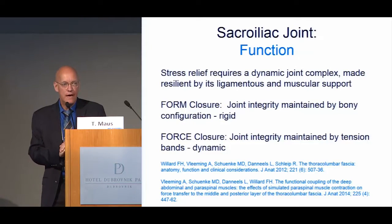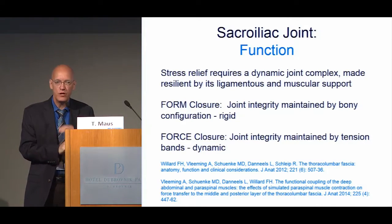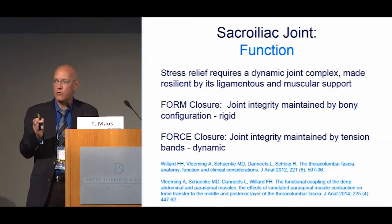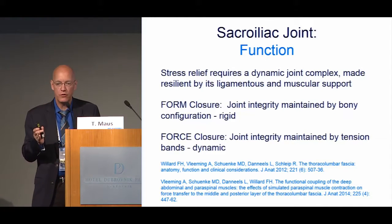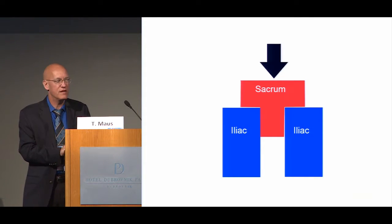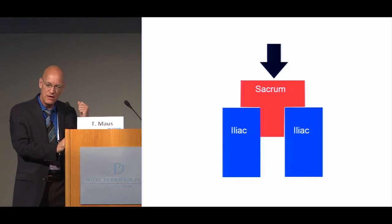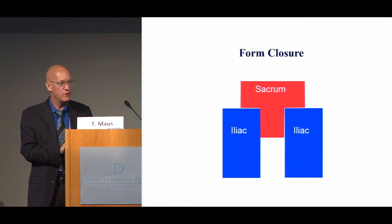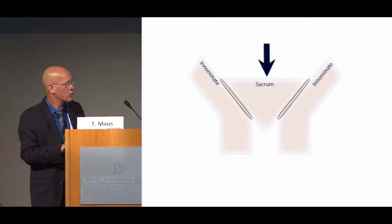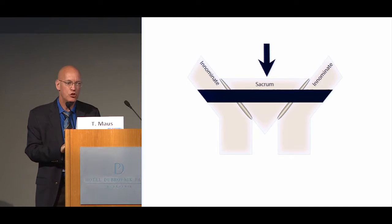This stress relief requires a dynamic joint complex, made resilient by its ligamentous and muscular support. Anatomic colleagues describe joint configurations in terms of form closure or force closure. In form closure, joint integrity is maintained by bony configuration entirely — rigid, but no ability for stress relief. In force closure, joint integrity is maintained by tension bands and is dynamic. The sacrum is a triangle sitting in the congruent concavity of the innominate bones, but downward axial force would tend to spread those innominate bones unless held in place by a tension band — which is essentially the construct of the sacroiliac joint.